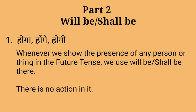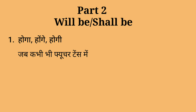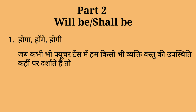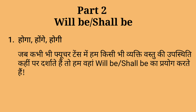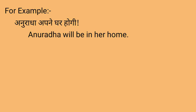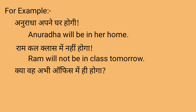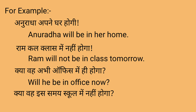Will be, shall be ka priyog — Part 2, Number 1: Hoga, honge, hogi. Jab kabhi bhi future tense mein hum kisi bhi vyakti ya vastu ki upasthiti kahin par darshate hain, to hum wahan will be, shall be ka priyog karte hain. Ismein kriya nahi hoti. For example: Anuradha apne ghar hogi — Anuradha will be in her home. Ram kal class mein nahi hoga — Ram will not be in class tomorrow. Kya vah abhi office mein hi hoga — Will he be in office now? Kya vah is samay school mein nahi hoga — Will he not be in school at this time?